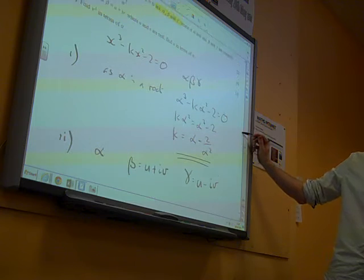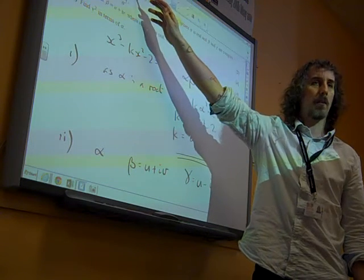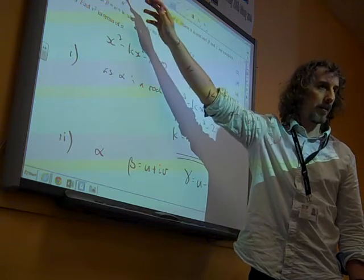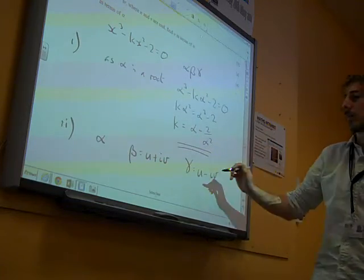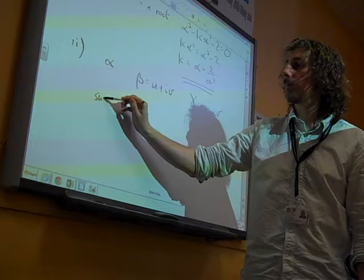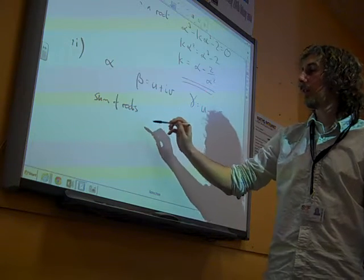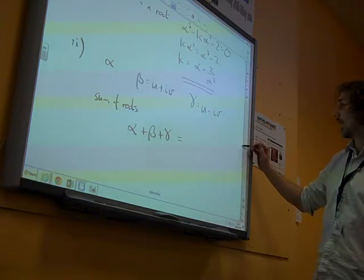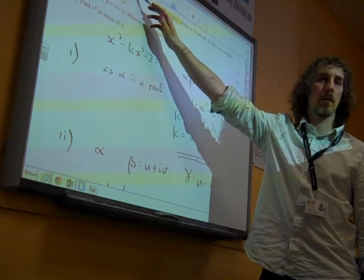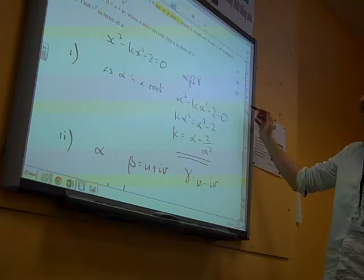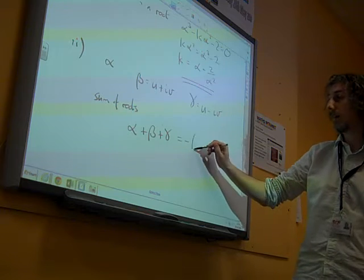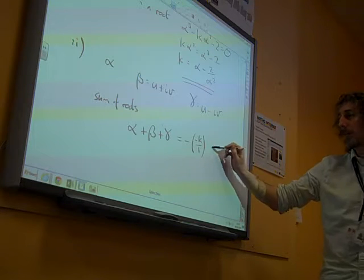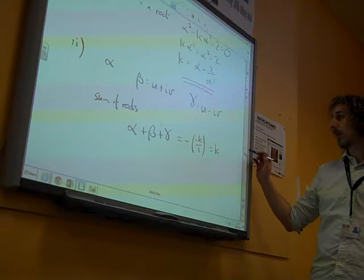What do we already know? This is the first term, this is alpha plus beta plus gamma, because that's what we get from the x squared term. So if we consider the sum of the roots, alpha plus beta plus gamma is minus that over 1, so minus k over 1. So alpha plus beta plus gamma equals k.